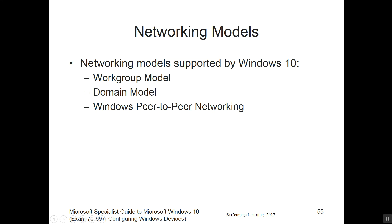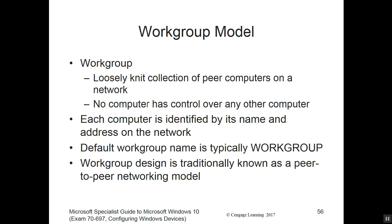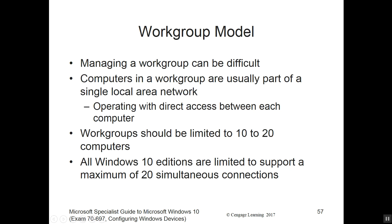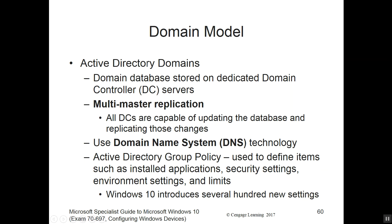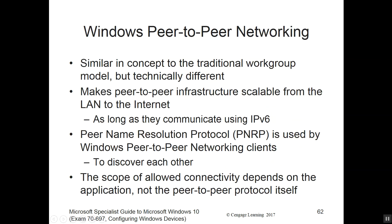We've got different networking models. There's a workgroup model, domain model, or Windows peer-to-peer networking. The workgroup is for smaller networks, usually 10 to 20 computers. The domain model is for larger systems with greater security and permissions concerns, featuring multi-master replication, domain name services (DNS), and Active Directory. On the peer-to-peer side, we've got Peer Name Resolution Protocol (PNRP), which allows us to discover other client machines — the peers — on our network.